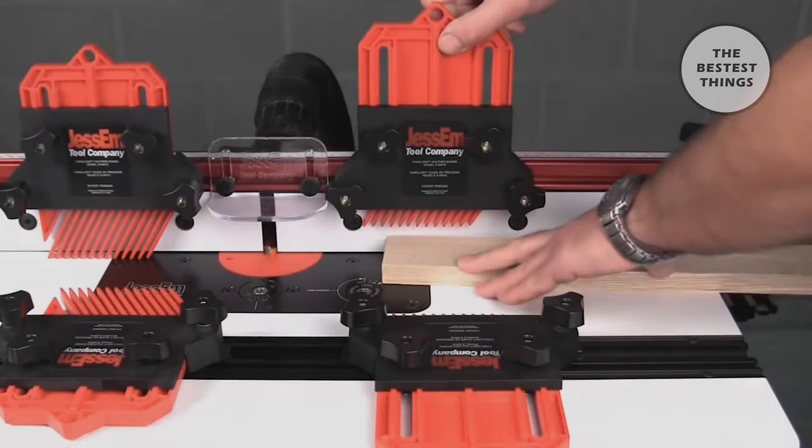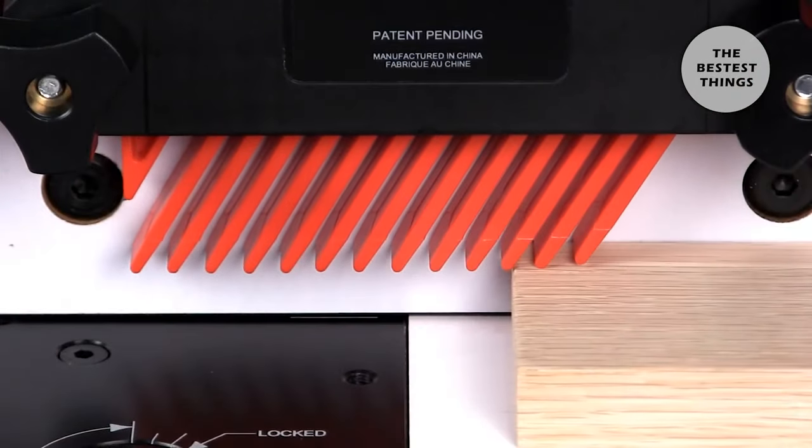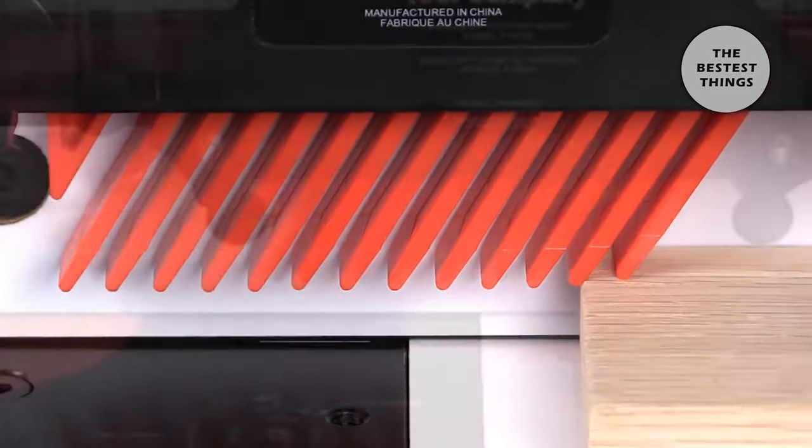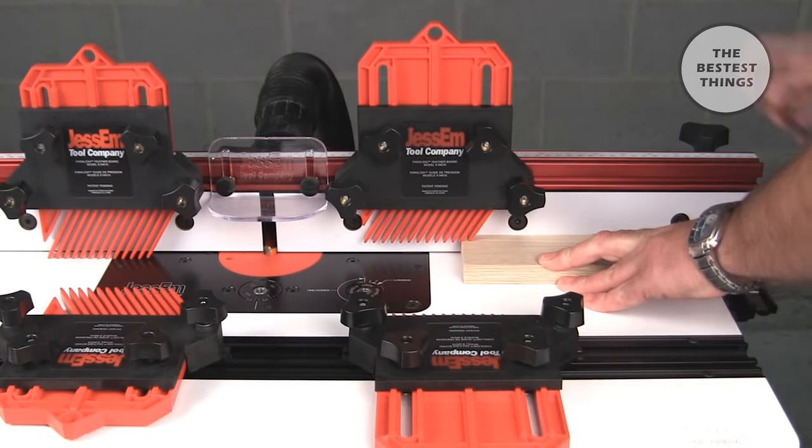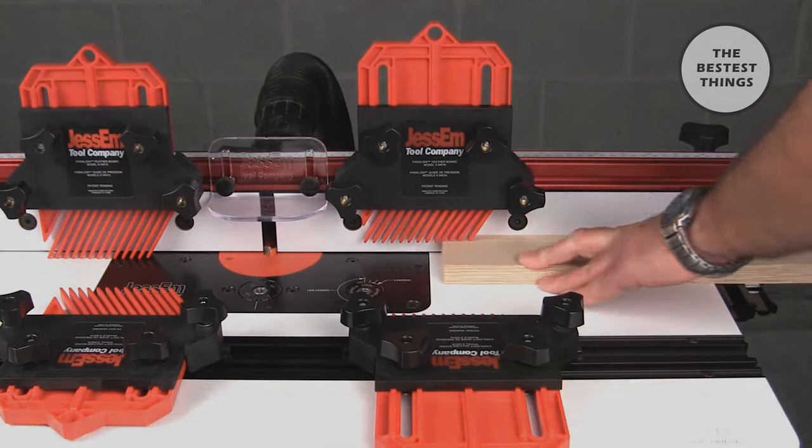To set your Paraline Featherboards, place them against your work and slide the workpiece back to the setup finger. Lock them in place and you're ready to go. They are set with uniform pressure across all the fingers.